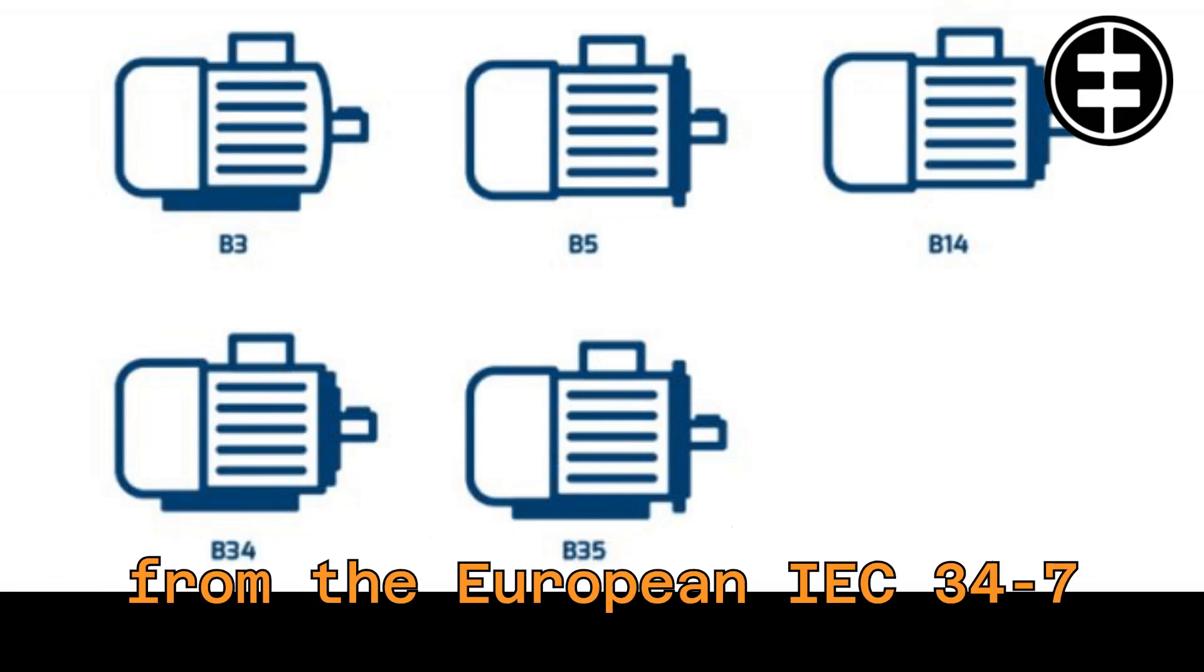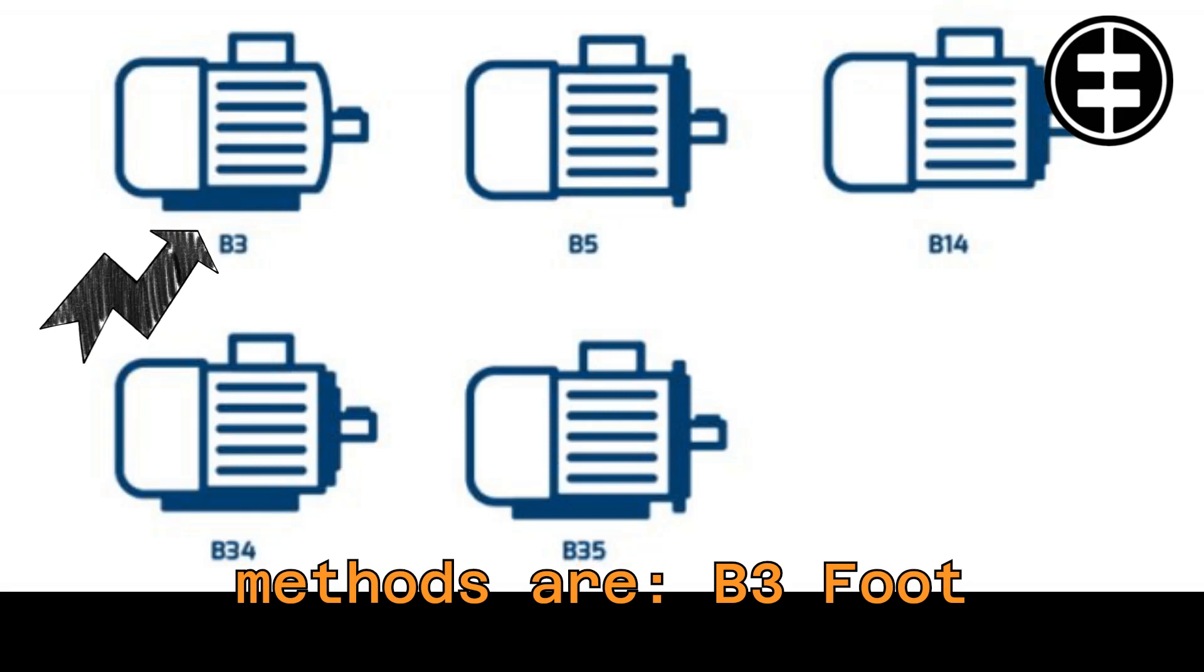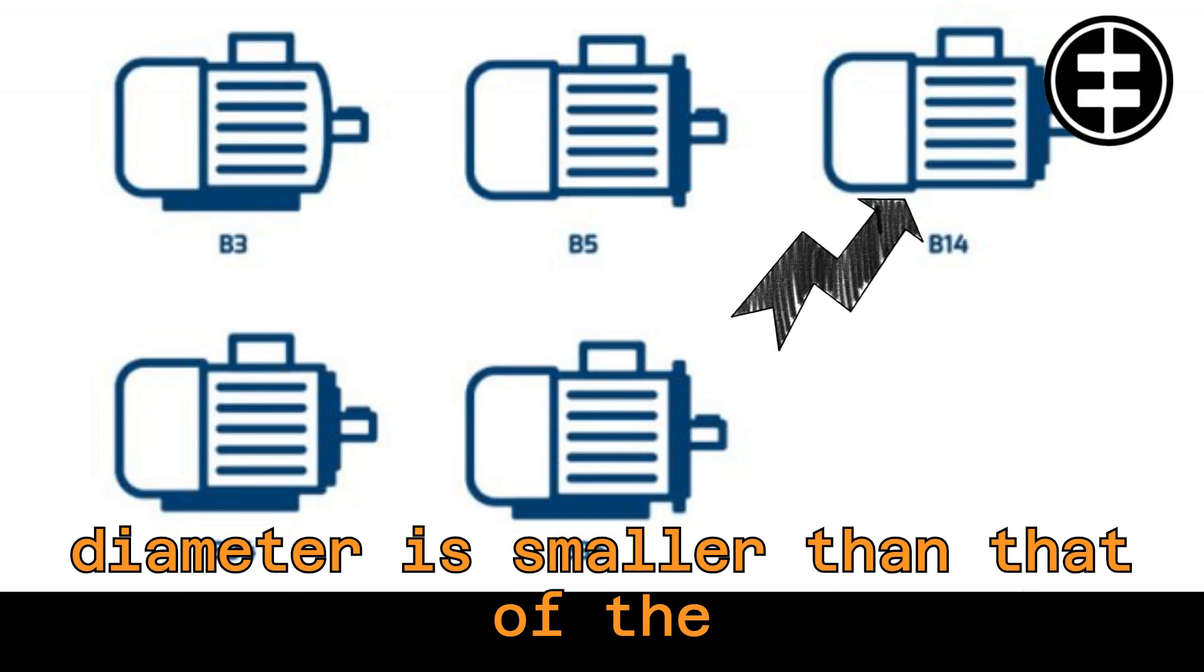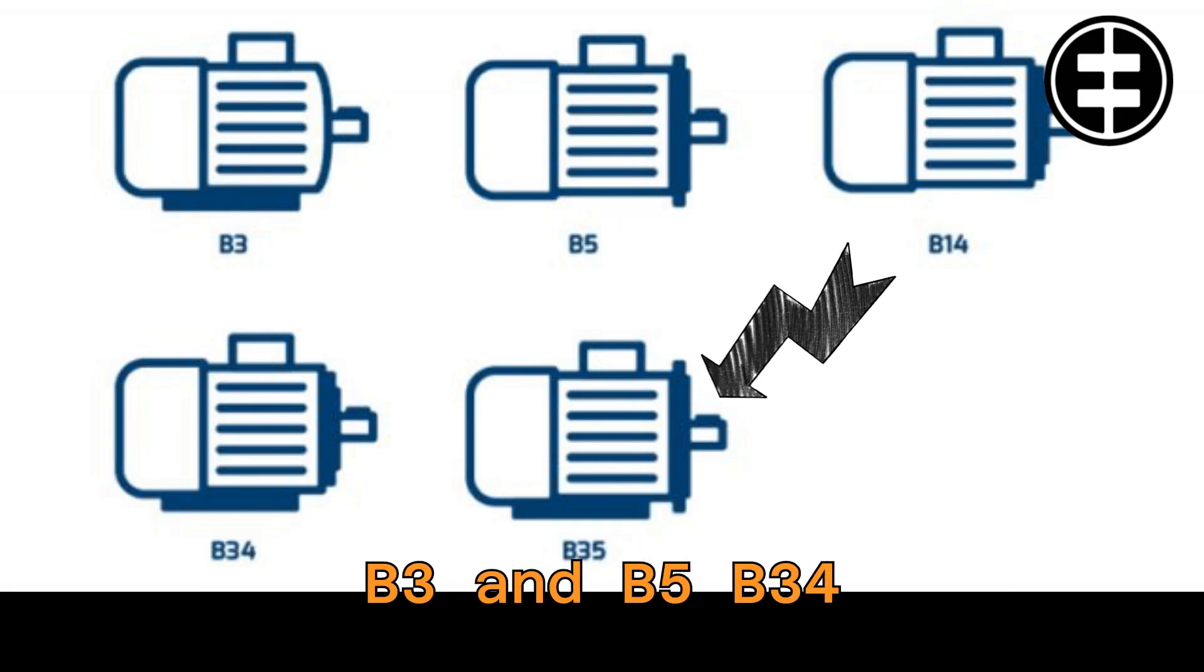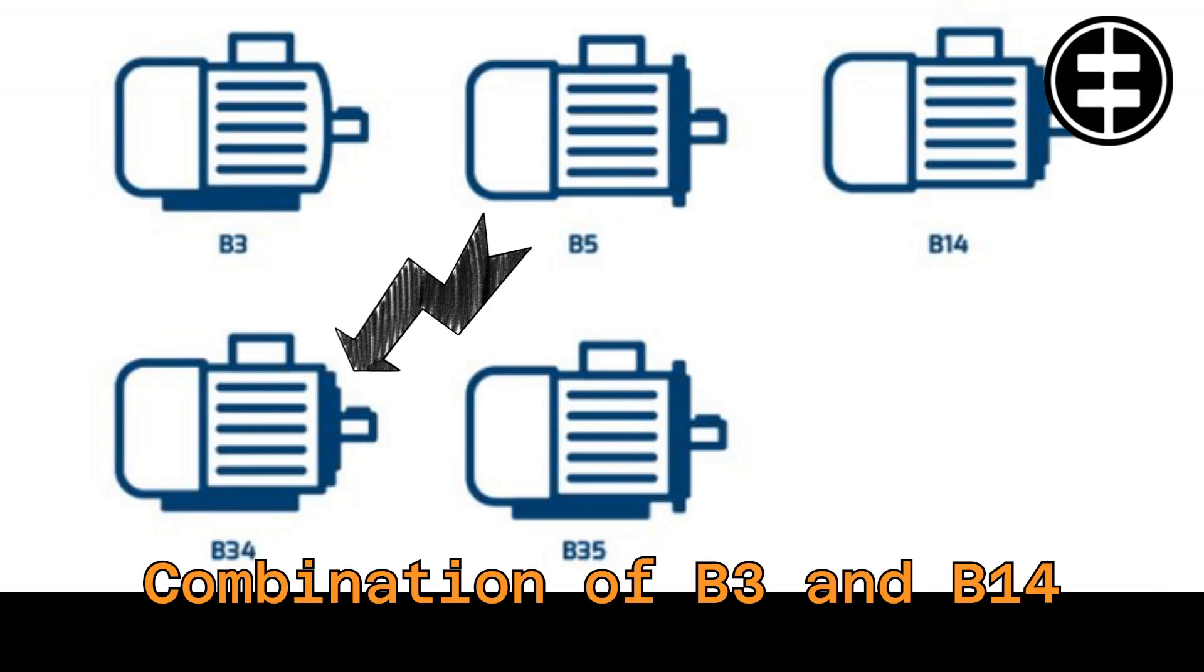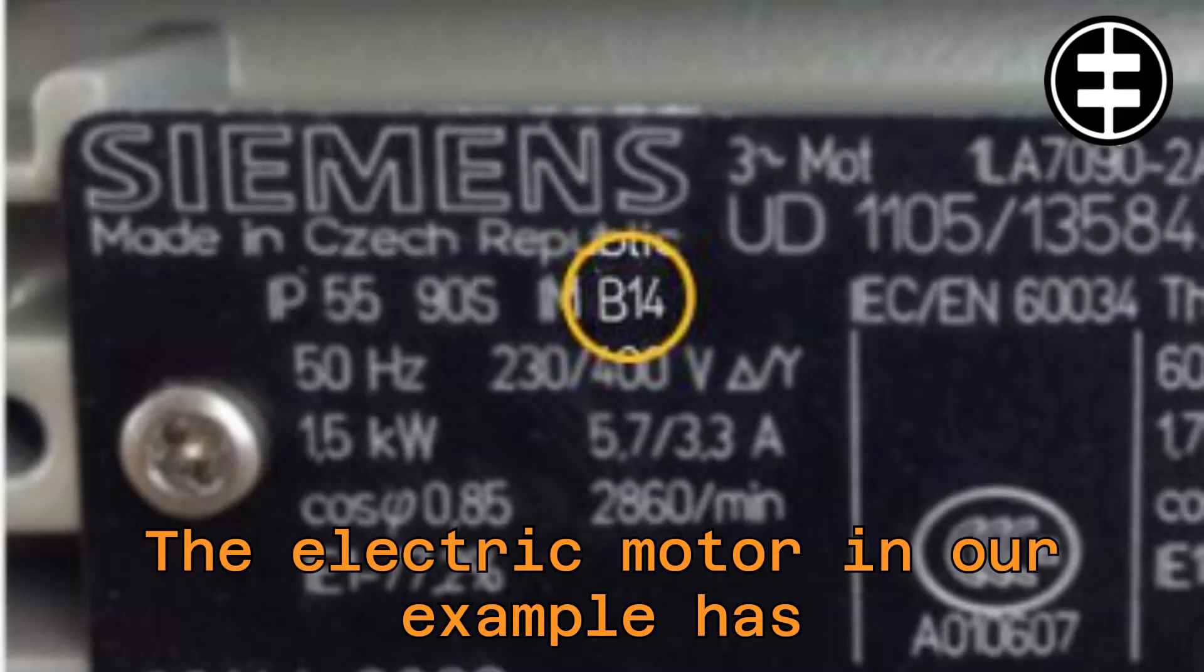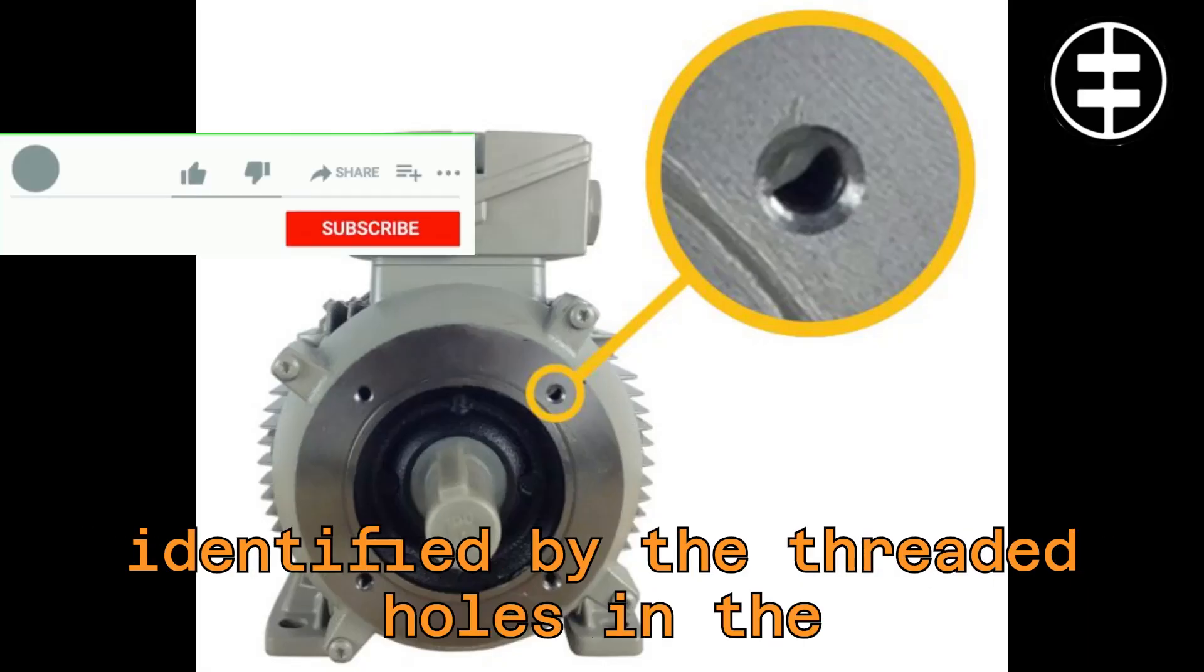The five most commonly used mounting methods are shown. The design can often be read from the nameplate. However, it can also be determined using these drawings. The electric motor in our example has mounting B14. This is an inner flange. This design can be identified by the threaded holes in the face of the motor.